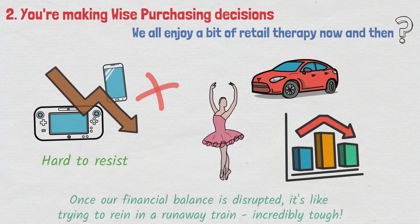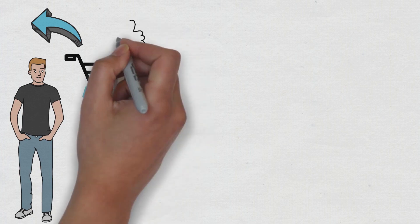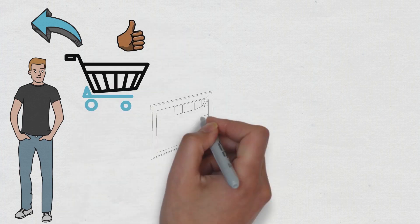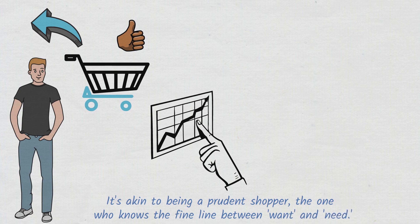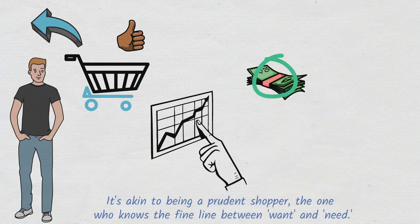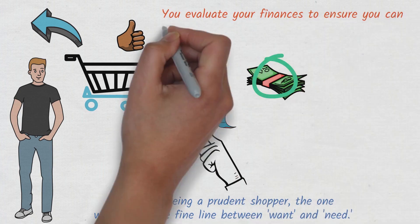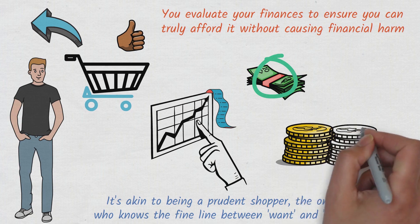But here's where the silver lining lies. If you're the kind of person who pauses, takes a step back, and reflects before making a purchase, then kudos to you. You're an absolute rock star when it comes to money management. It's akin to being a prudent shopper, the one who knows the fine line between want and need. When you do decide to splurge on something, you make sure it doesn't overturn your budget. Furthermore, when you have your eyes set on a big-ticket item, you evaluate your finances to ensure you can truly afford it without causing financial harm. This approach isn't just clever, it's the epitome of financial wisdom.